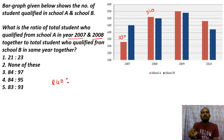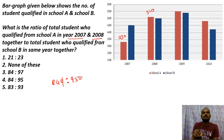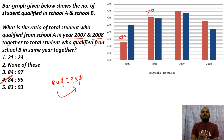For School B in 2007 and 2008 combined, the value is 450 plus 500, which gives 950. So the ratio is 840 to 950, which simplifies — the answer is option 4.